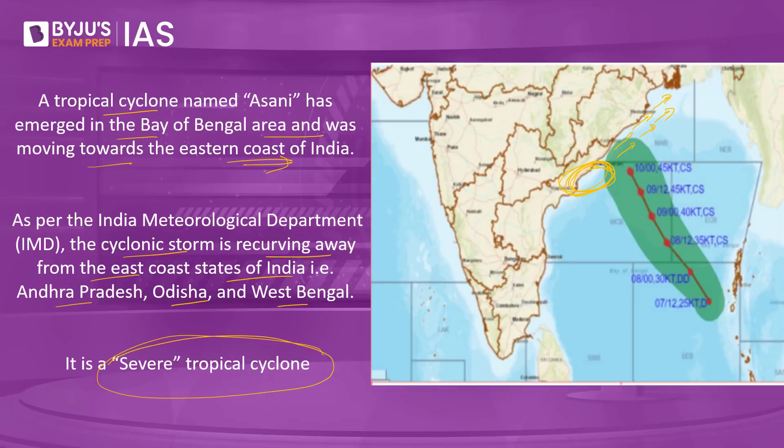Other cyclones like Fani and Amphan were able to make landfall with high wind speeds, causing significant damage to those areas. But since Asani has not made landfall, it is not going to have a significant impact and the damage would be comparatively less. Asani happens to be classified as a severe tropical cyclone.